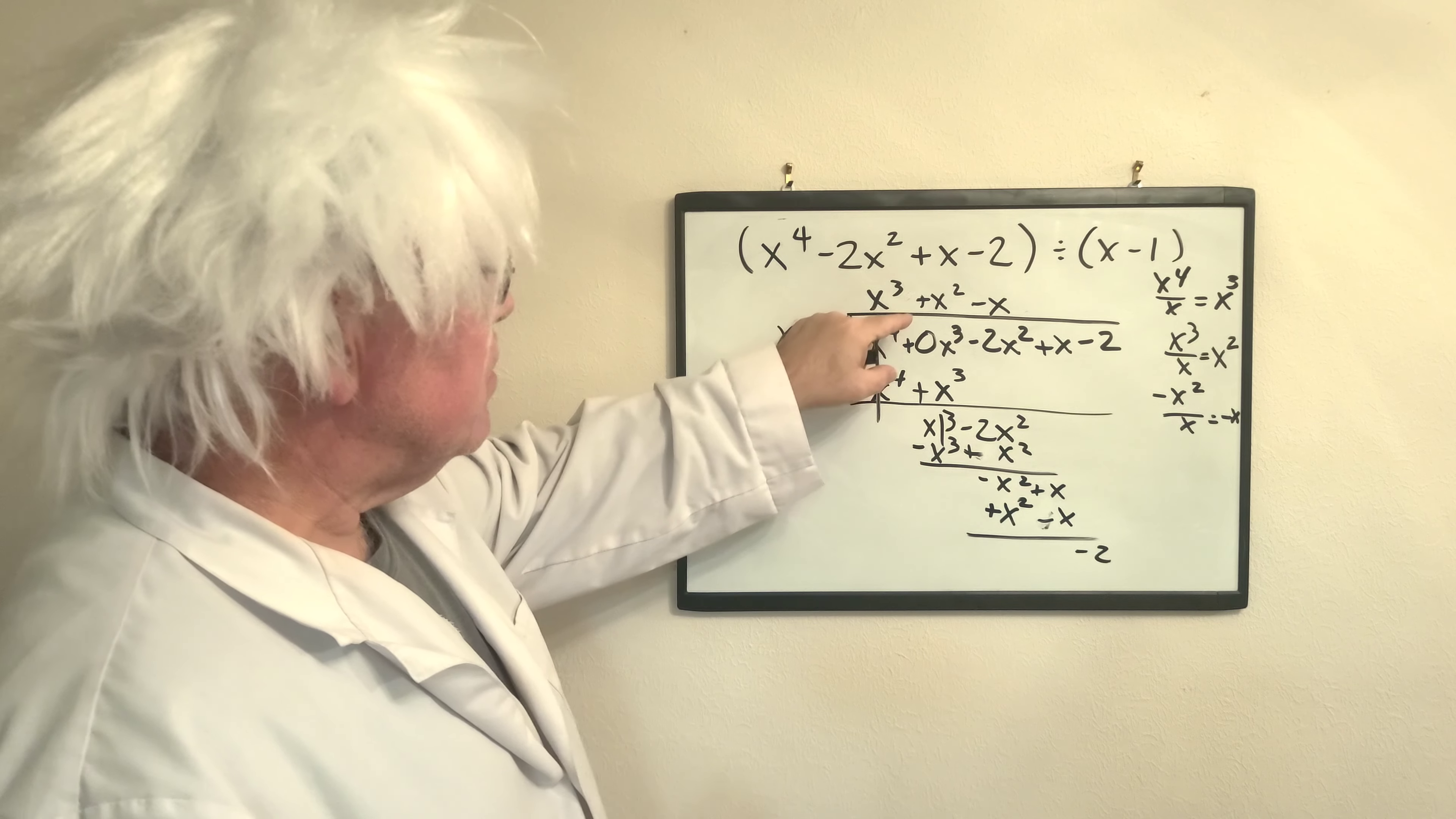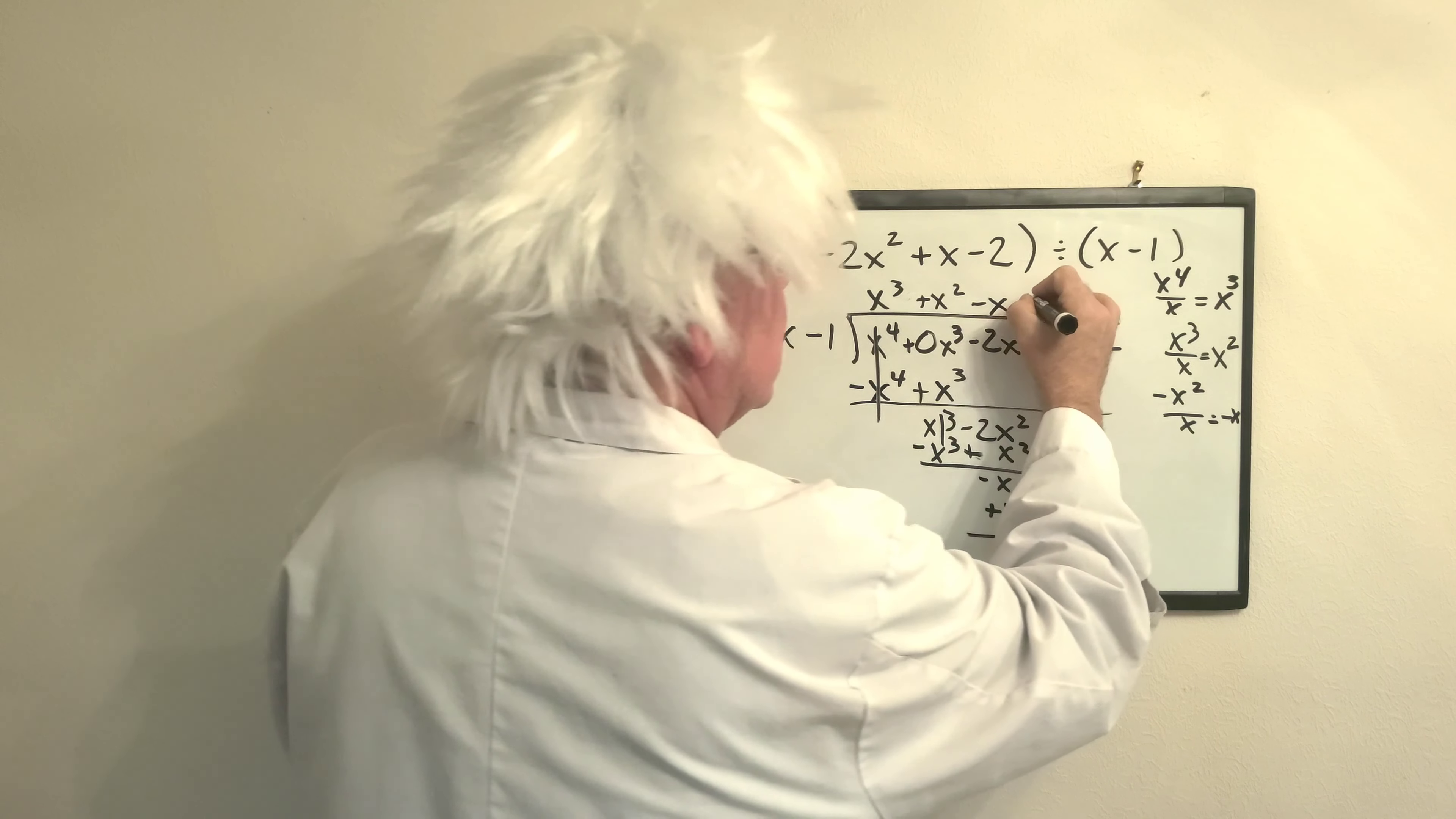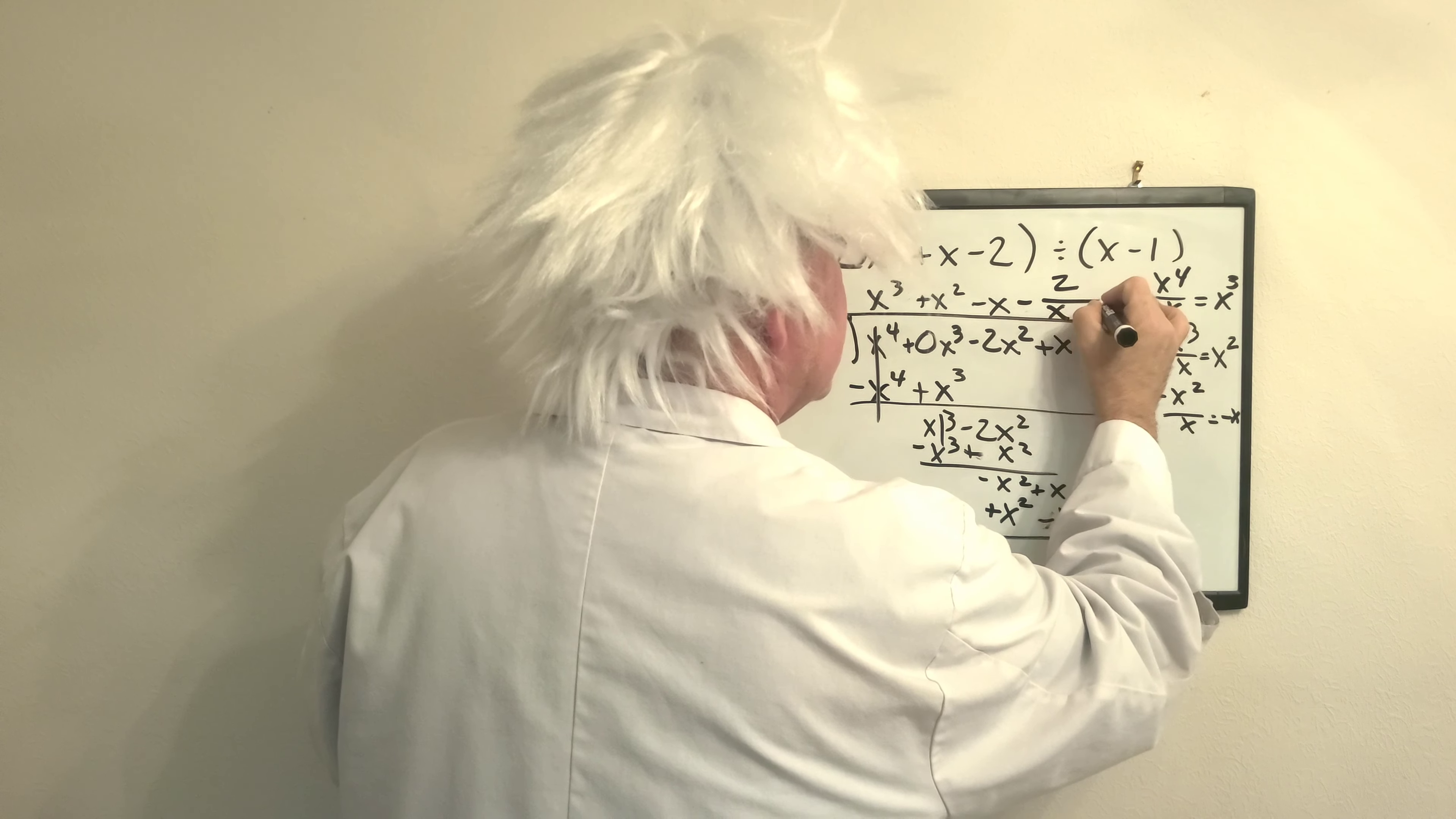This is going to be x cubed plus x squared minus x. Since there was nothing left over, this is going to be minus 2 over x minus 1.